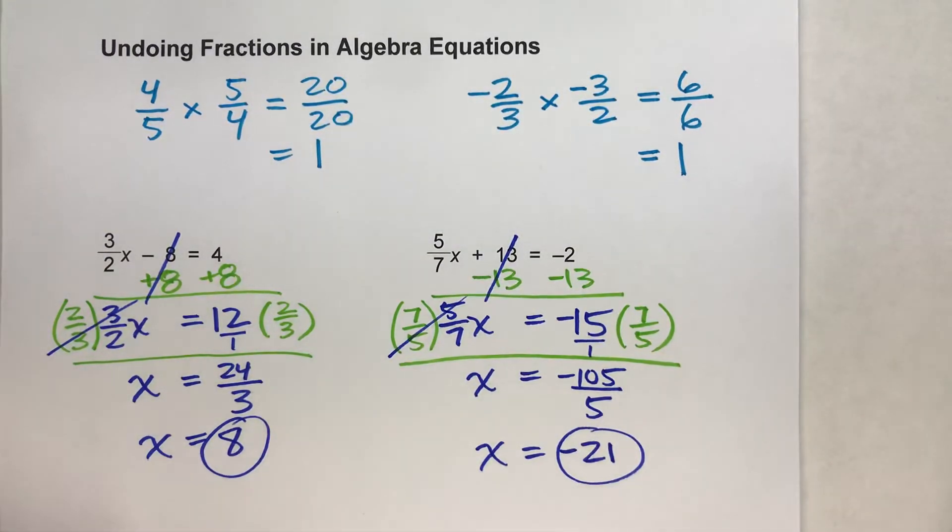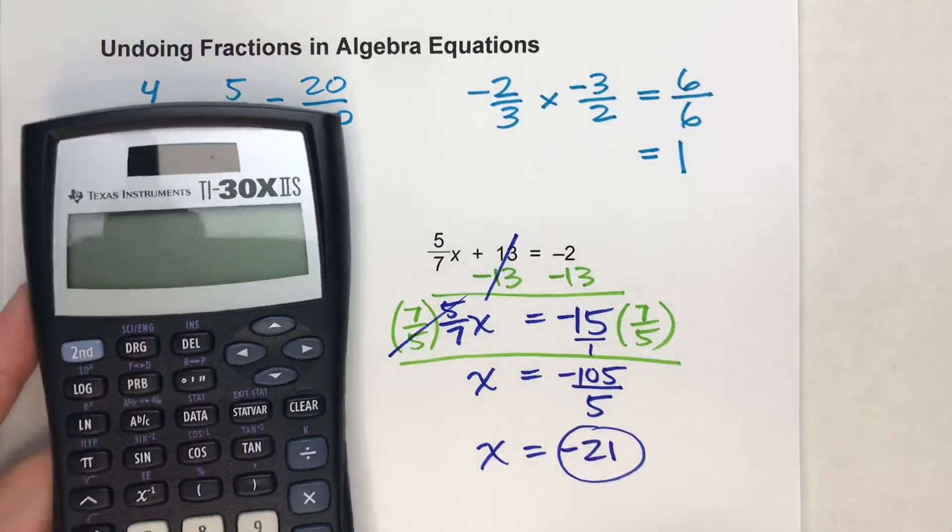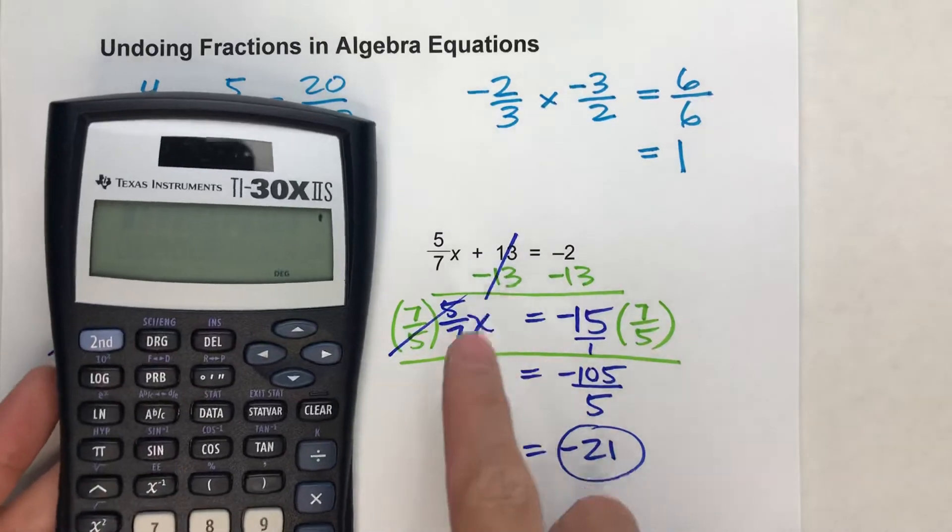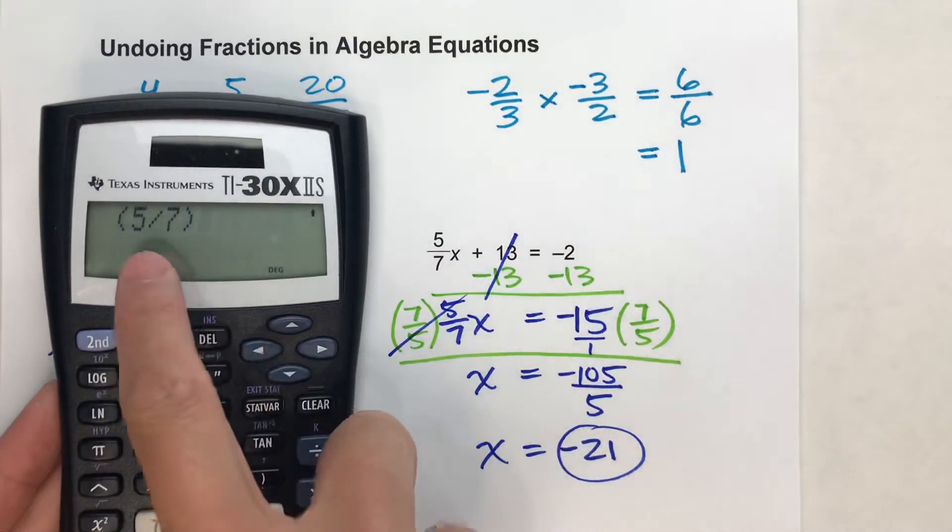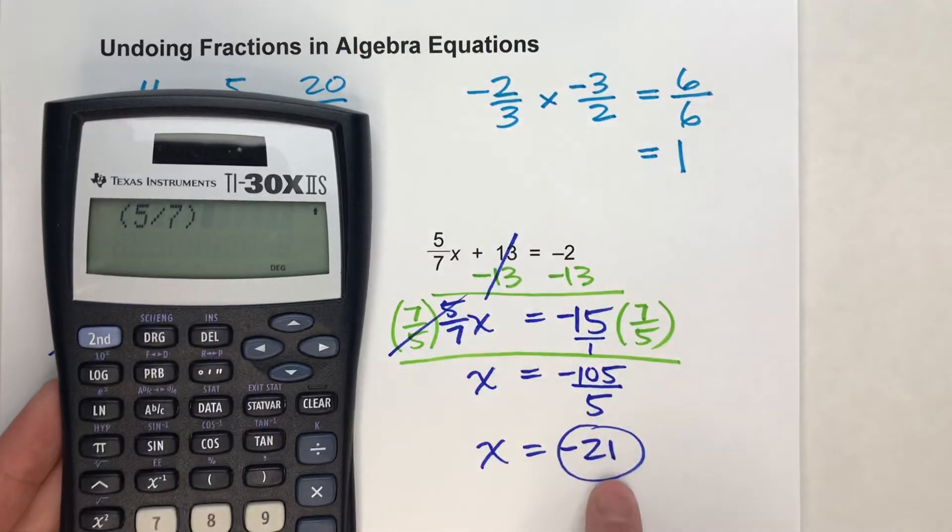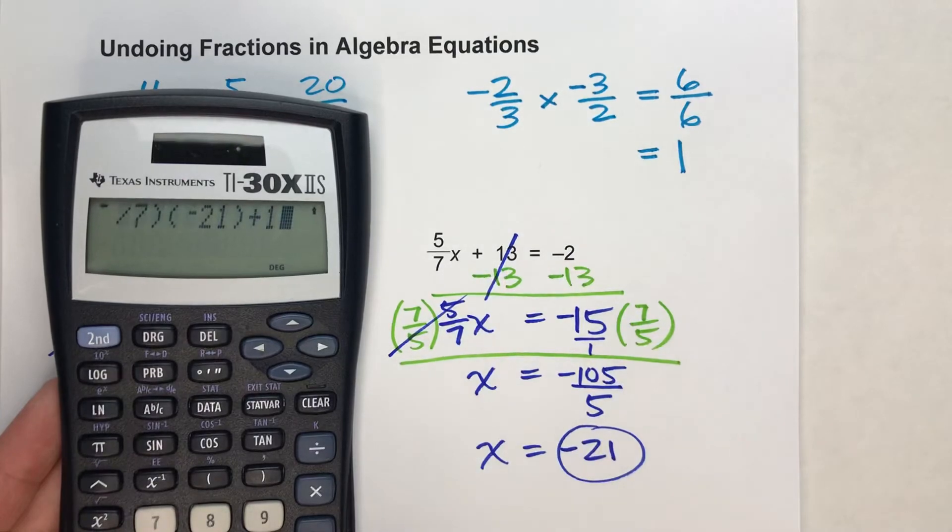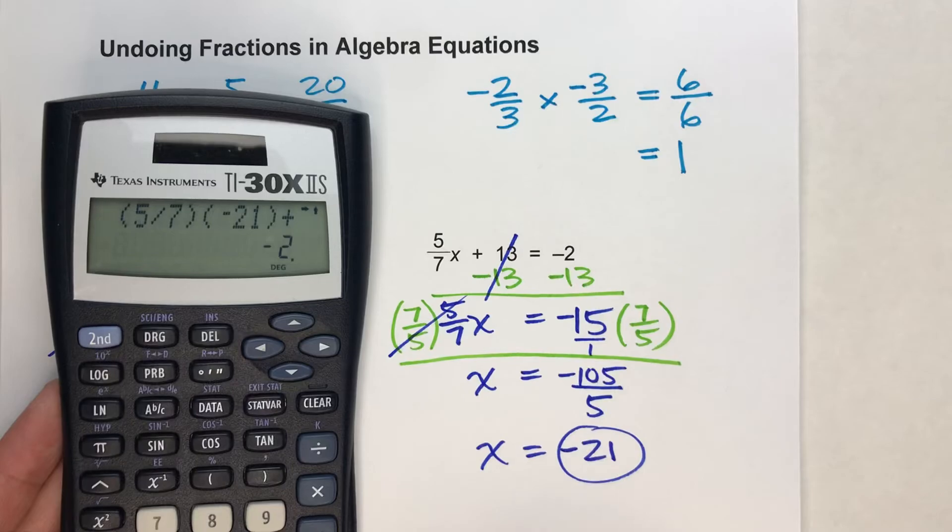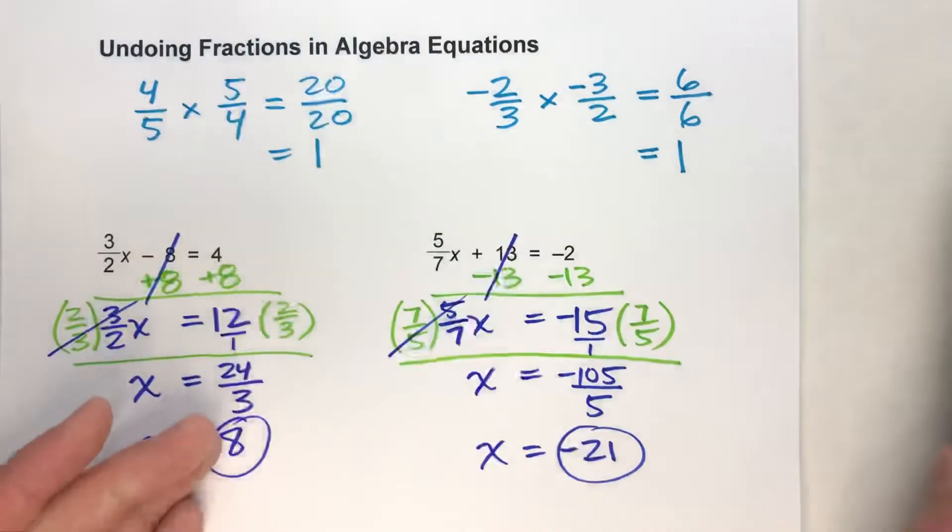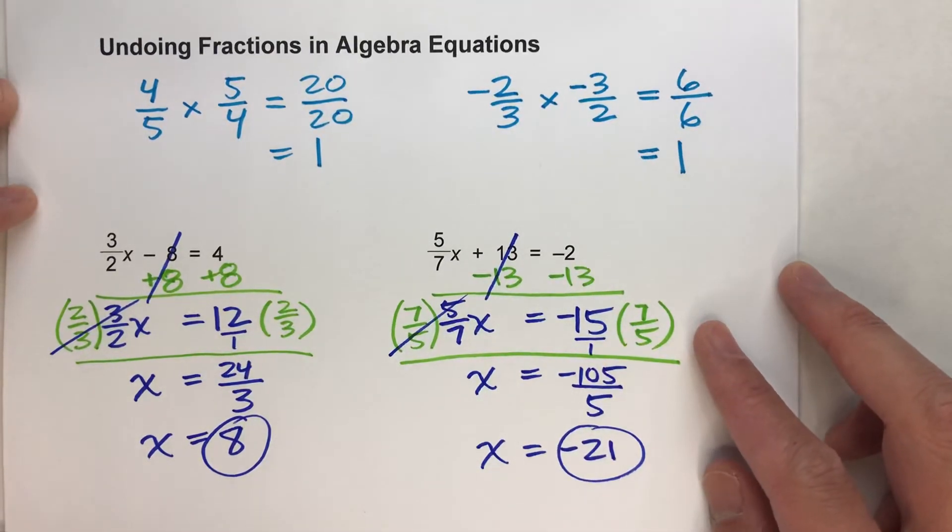And of course, if you're not sure if you got the correct answer or not, you can always check it pretty easily on a calculator. I'll show you what I mean. We'll do this last one over here. 5 sevenths, so I'll put 5 sevenths in parentheses, times x, which I just found was negative 21, plus 13. And if we did this right, it should equal negative 2. And it does. And that works with all algebra. You can always check algebra equations with a calculator.